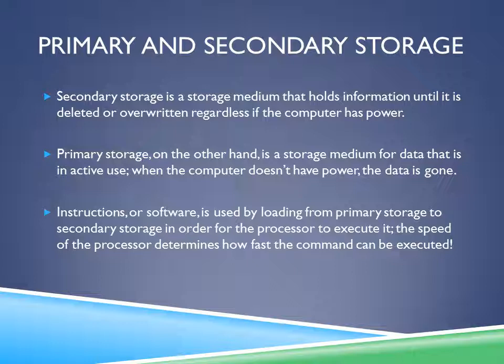Primary Storage, on the other hand, is a storage medium for data that is in active use. When the computer doesn't have power, the data is gone. Examples of this include RAM or CPU. Instructions or software are loaded from Primary or Secondary Storage in order for the processor to execute them. The speed of the processor determines how fast the command can be executed.